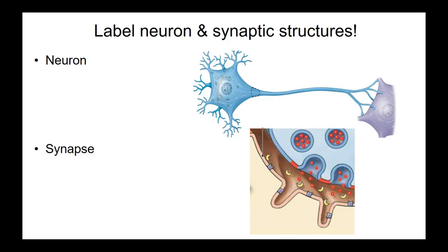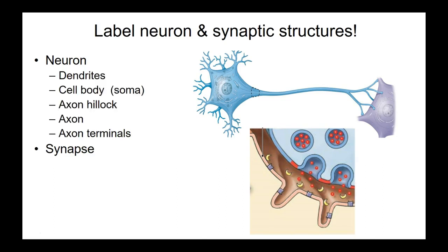Labeling structures: be sure to take a look at this slide and be able to label the following structures on a neuron — dendrites, the cell body or soma, the axon hillock area, which is really important, the axon itself, and the axon termini. Each one of these is a single terminal. The action potential starts here and moves down the axon.